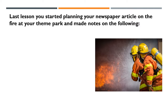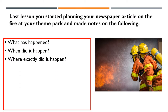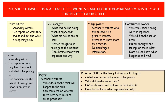Now that we've looked at some headings, let's consider moving on to your actual newspaper article. Last lesson you started planning your newspaper article on the fire at your theme park and made notes on the following: what happened, when did it happen, where did it happen, who was involved or witnessed it, and why did it happen. You should have also chosen at least three witnesses and decided on what statements they will contribute to your article.